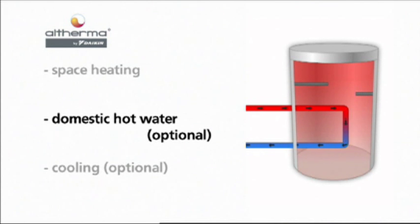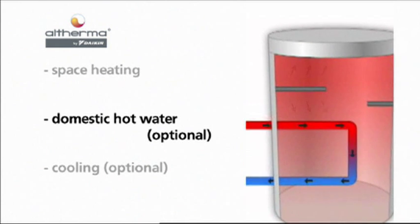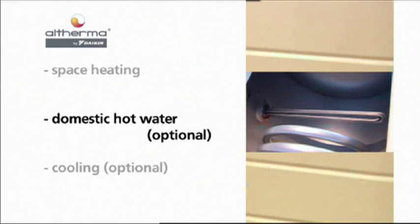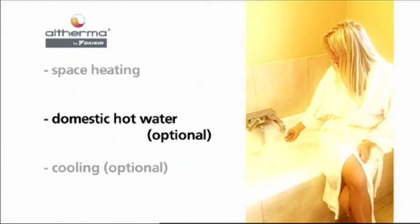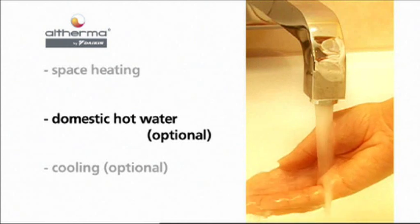For rapid heat up or to reach higher temperatures, for instance during tank disinfection, an integrated booster heater provides additional capacity. Altherma supplies up to 435 litres of warm water per draft depending on the selected tank size and set point temperature.